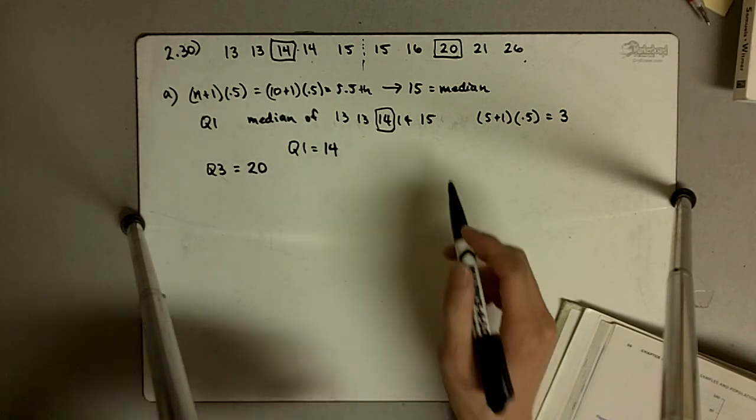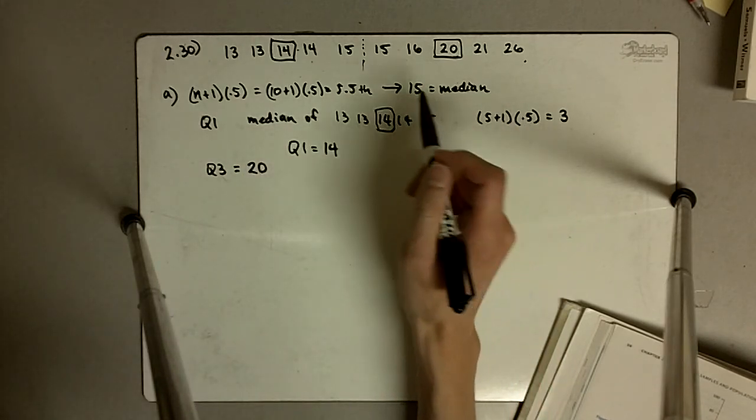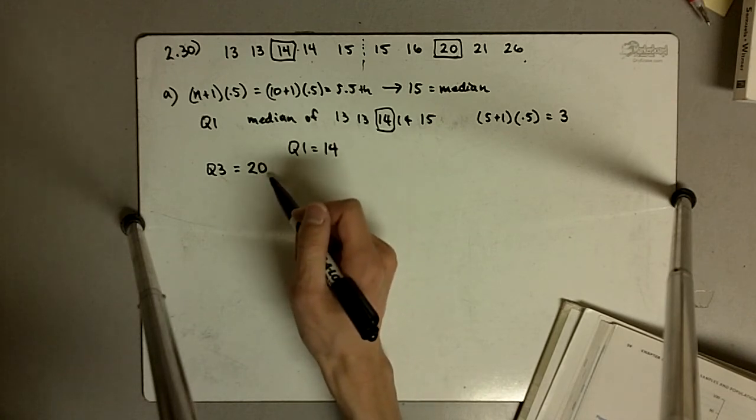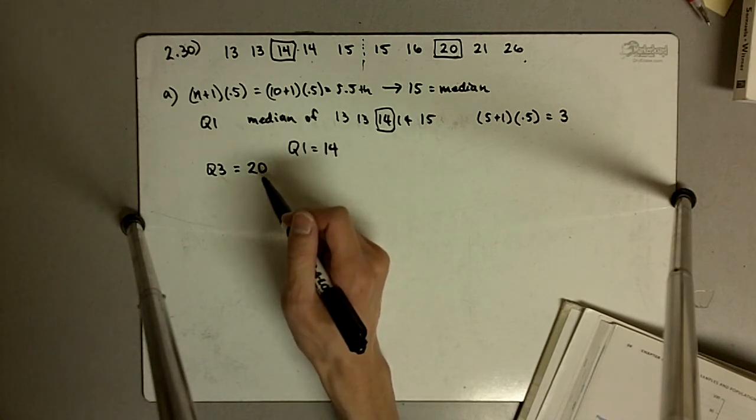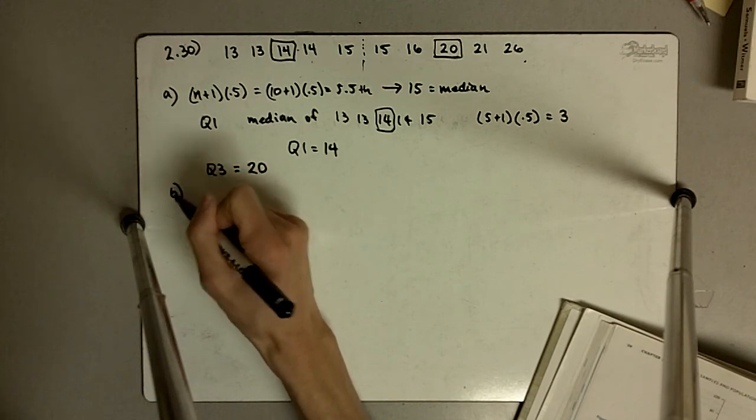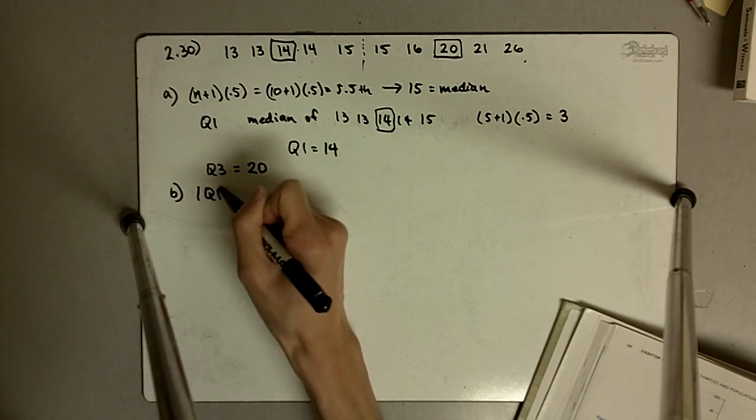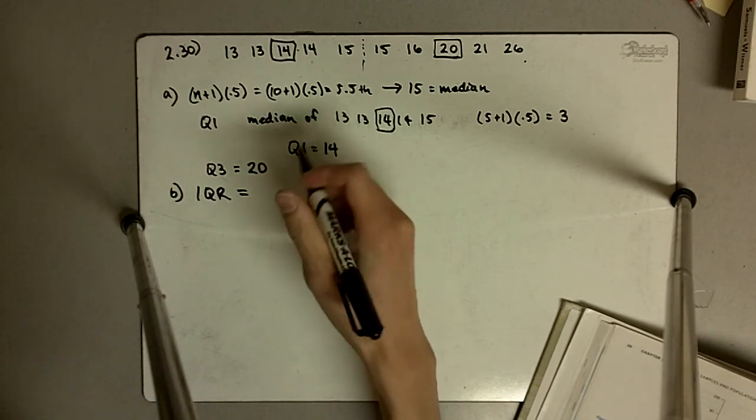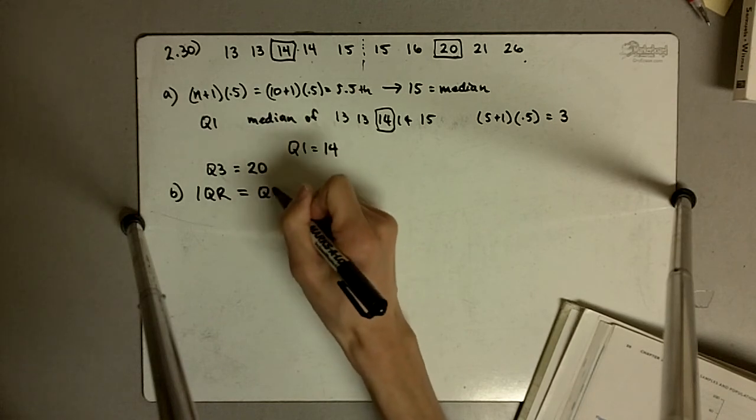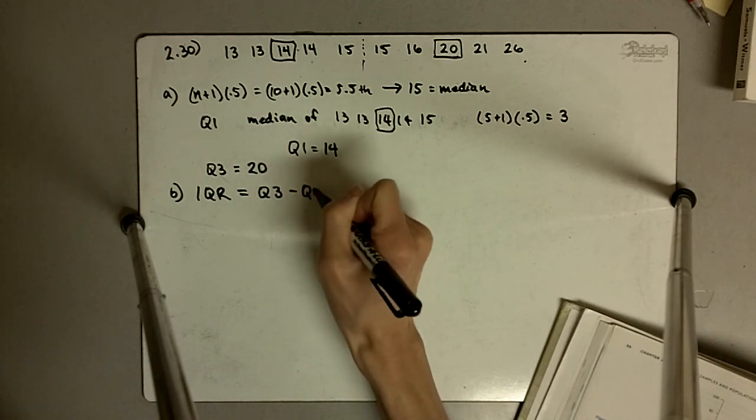So part A, our median is 15, our first quartile is 14, and our third quartile is 20. The interquartile range is defined as Q3 minus Q1.